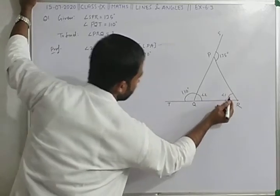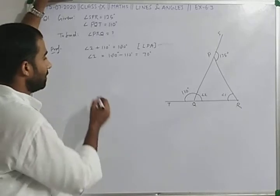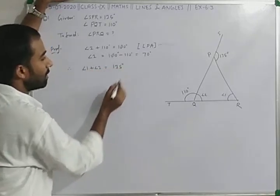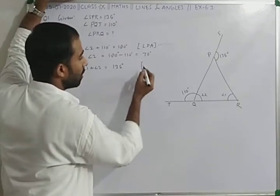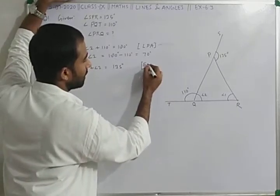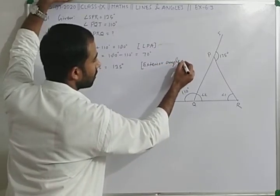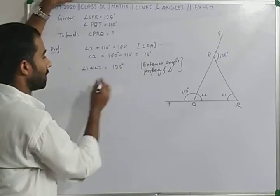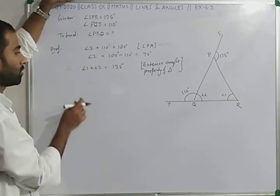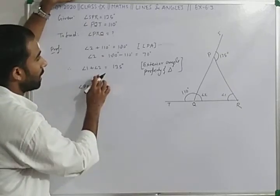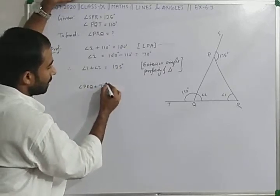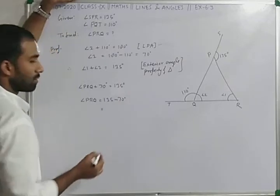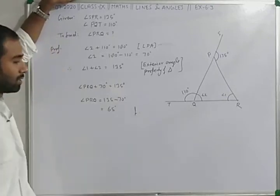Now we need to find angle 1, which is angle PRQ. Using exterior angle property of triangle (Theorem 6.8): angle 1 plus angle 2 equals 135 degrees. So angle PRQ plus 70 degrees equals 135 degrees. Therefore, angle PRQ equals 135 minus 70 equals 65 degrees. I hope you understood.